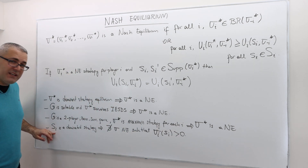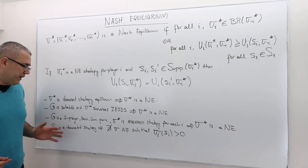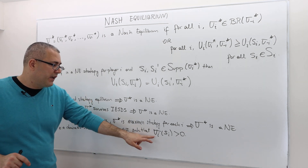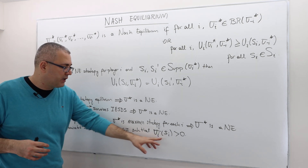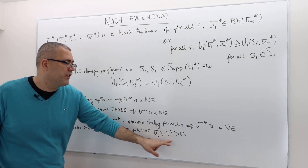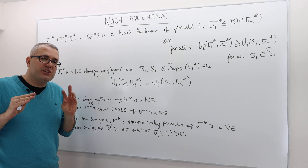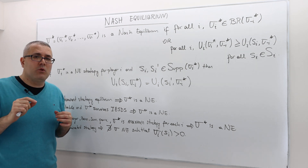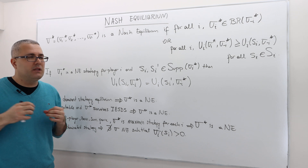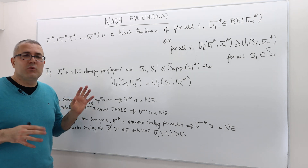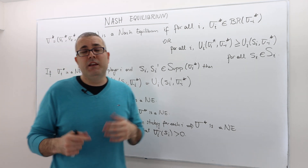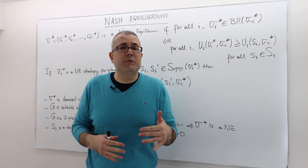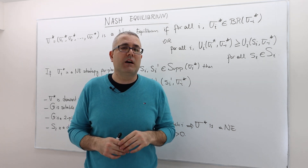Finally, if strategy si is a dominated strategy for player i in any game, then there cannot exist a Nash equilibrium where player i plays some mixed strategy that assigns si a positive probability. If a strategy is dominated, playing it with any positive probability — even very, very small — is never optimal. It will never be a best response. All these arguments are straightforward to prove; I proved some in previous videos. They are very useful exercises.